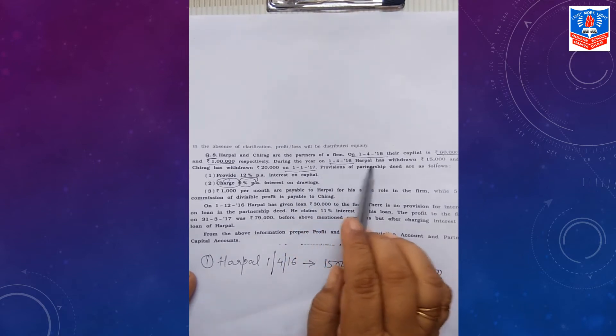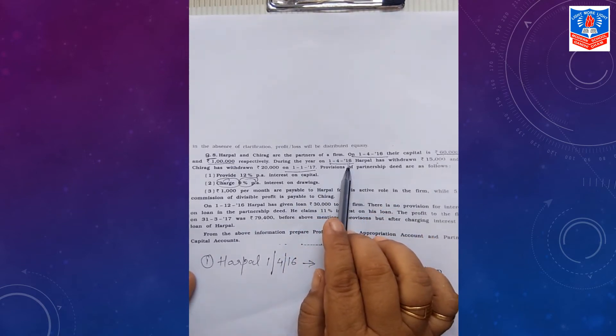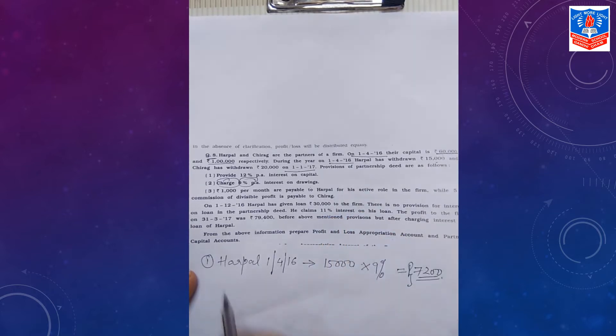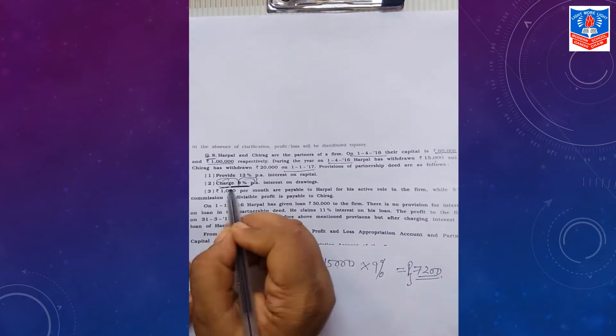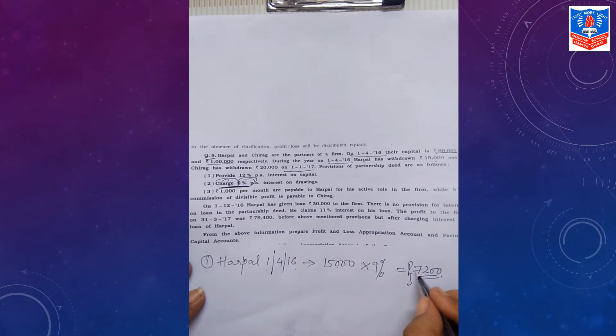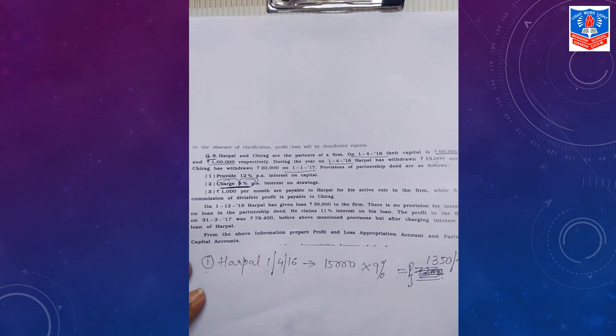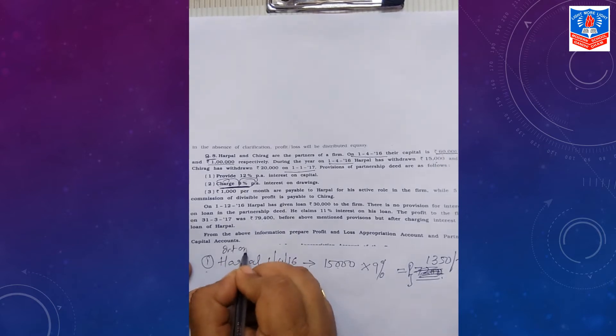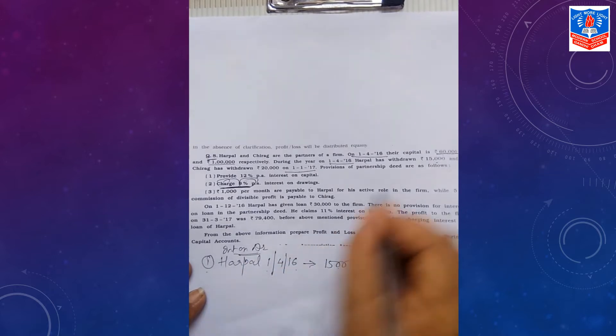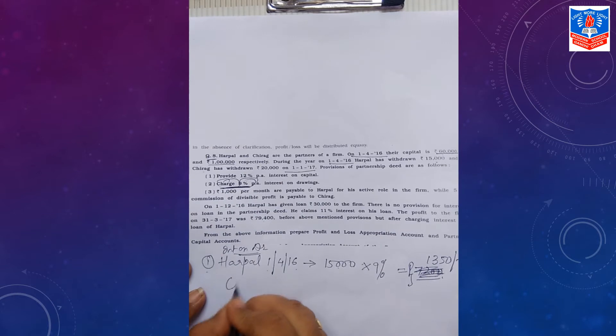Let us see what is further given in the question. Here, during the year, Harpal has withdrawn Rs. 15,000 on 1st April 2016, opening date. So I am calculating, showing you here calculation. Harpal, 1st April 2016, that means full yearly interest on drawing Rs. 15,000 and interest on drawing is given clearly 9% to you. So it comes to Rs. 1,350.